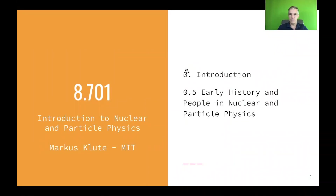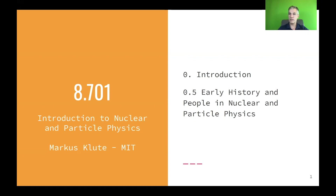Welcome again to 8701. This is the fifth section of our introduction. I'd like to talk about the early history and the people involved in nuclear and particle physics. I cover the period from 1820 to the beginning of the Second World War — other elements of the later history of the standard model, parity violation, and CP violation will be covered when we talk about the actual physics. But I'd like to give you more background, especially since we start with particle physics. It's good to understand what was the starting ground, which shoulders people stood on at the time.